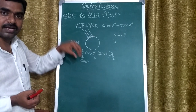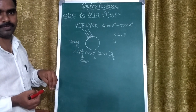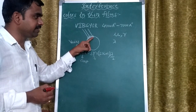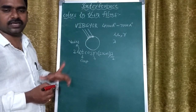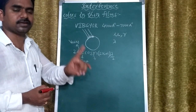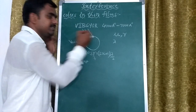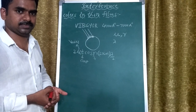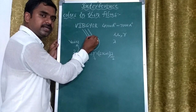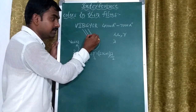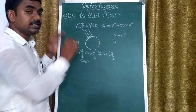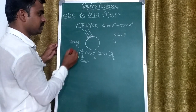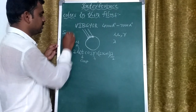The path difference depends on which color is incident on that particular point. If we take any point that is satisfying constructive interference for one particular color, that same point is satisfying destructive interference for all the remaining colors. Due to this, we can observe only the color that undergoes constructive interference at that point. This is the case for the soap bubble.